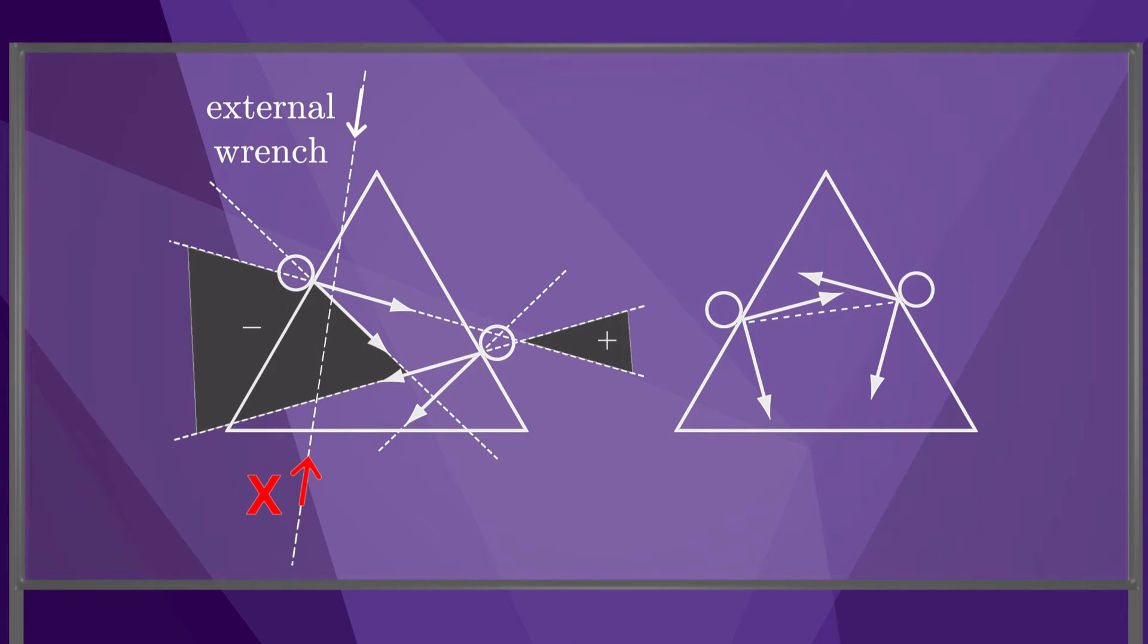If we increase the friction coefficient and move the fingers, however, then there is no consistent moment label. This means that the frictional contacts can generate any wrench.